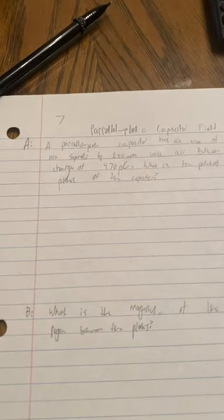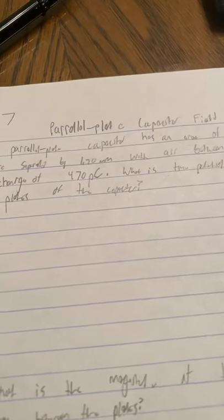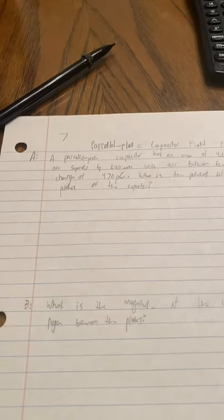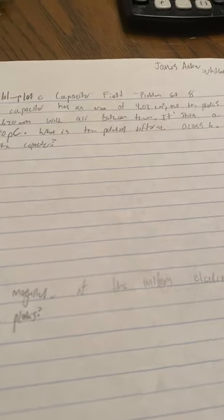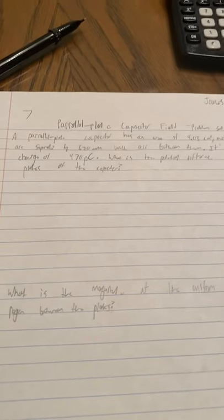Okay, my name is James Andrew Whitlock and this is the seventh problem in problem set eight, the parallel plate capacitor field. A parallel plate capacitor has an area of 4.03 centimeters squared and the plates are separated by 1.2 millimeters with air between them. It stores a charge of 470 picocoulombs. What is the potential difference across the plates of the capacitor?